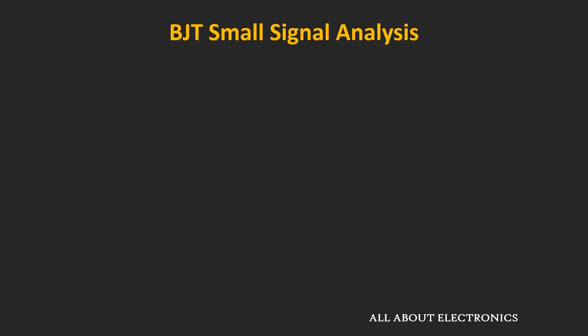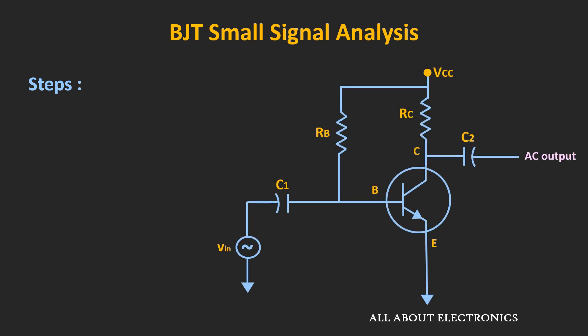Now let's see the steps we need to follow for the small signal analysis of the BJT. For simplicity, let's take the example of the common emitter fixed bias configuration, where the BJT is used as an amplifier in the common emitter configuration. The common emitter means the emitter terminal is common between the input and output side. The input signal is applied between the base and the emitter, while the output is taken between the collector and the emitter terminal, and the BJT is biased in the fixed bias configuration.